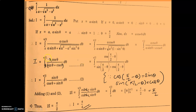We apply the property: integral 0 to a of f(x) dx equals integral 0 to a of f(a minus x) dx. So replacing theta with pi by 2 minus theta: cos(pi/2 minus theta) is sin theta, and sin(pi/2 minus theta) is cos theta. Applying this, i equals integral 0 to pi by 2 of sin theta upon (cos theta plus sin theta) d theta. This is equation number 2.